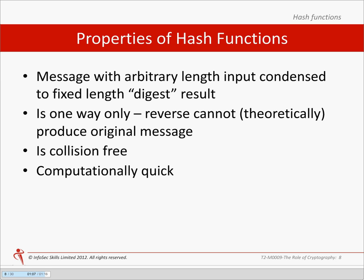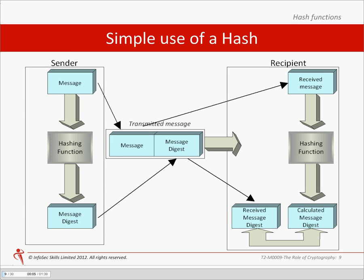Most security professionals and crypto experts now recommend the use of SHA2 for all new applications. Hash functions are designed to be computationally quick compared to symmetric and asymmetric algorithms. This diagram represents a simplified example of how a cryptographic hash function can be used. The sender generates a message, the system runs it through the hashing function and produces a message digest.